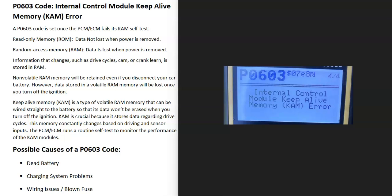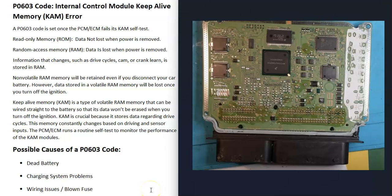What is a P0603 code? It's an internal control module keep alive memory (KAM) error. Basically, the computer that keeps the vehicle running is having an issue with its memory and storing data, mainly with the RAM memory.